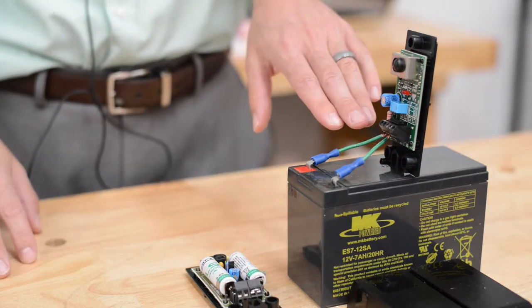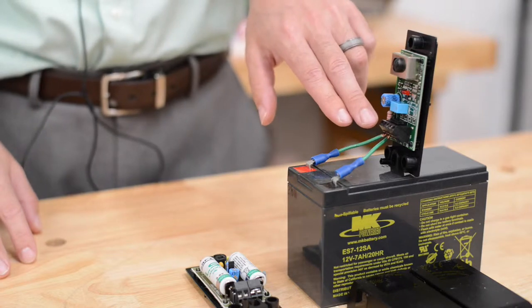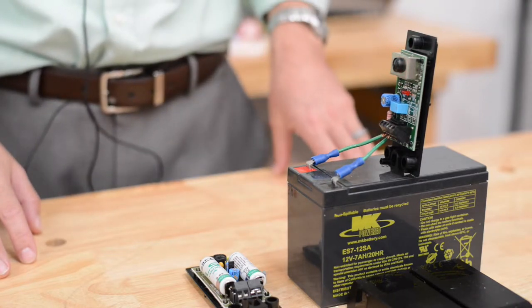You're going to feed power from the gate opener, positive on the first terminal, negative on the second terminal, 12 or 24 volts.